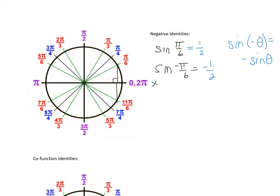So in this case, we did the sine of pi over 6 — that's 1 half. So if you had the sine of negative pi over 6, it would be negative 1 half.